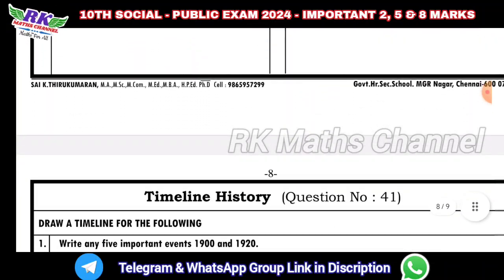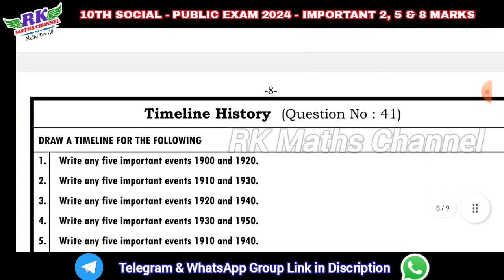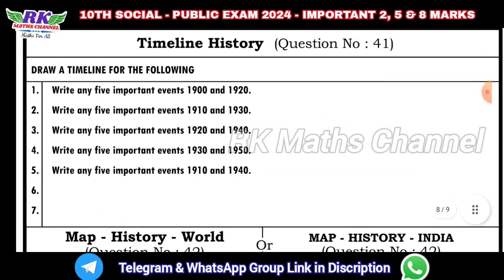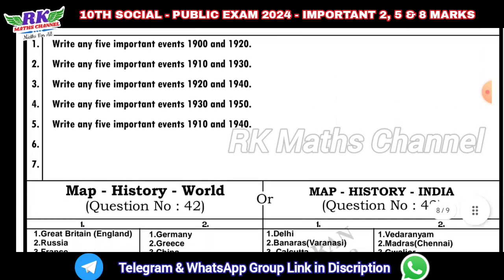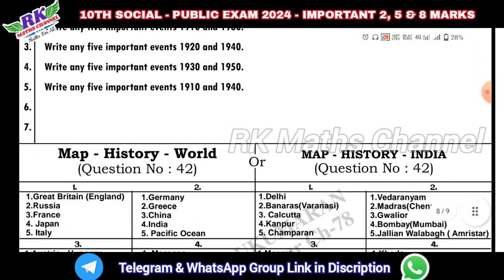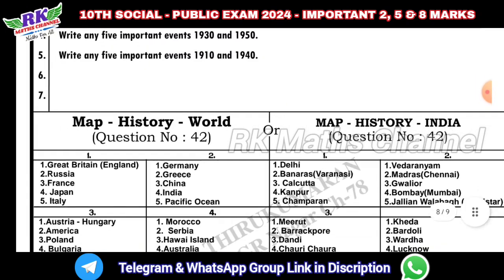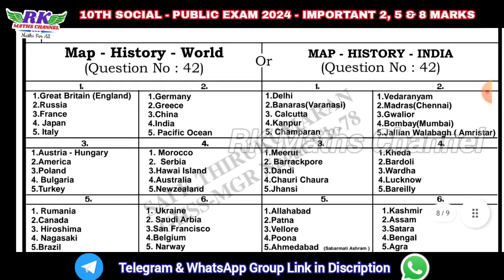Question number 41 is the compulsory timeline. The timeline covers 1900 to 1920, 1930, 1940 — we need the main 5 events for the timeline.